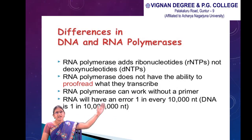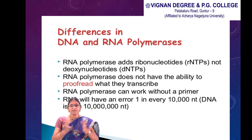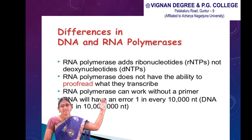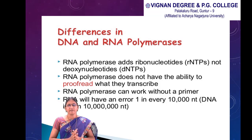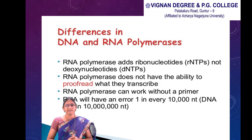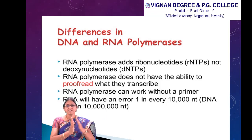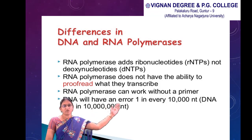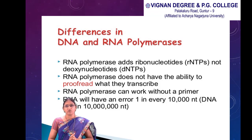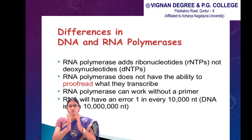The differences between DNA and RNA polymerases are: RNA polymerase adds ribonucleotides, not deoxyribonucleotides. RNA polymerase does not have the ability to proofread. Proofreading checks whether the right nucleotides are incorporated by moving the enzyme in the backward direction, which RNA polymerase cannot do. RNA polymerase can also work without a primer. The error rate for RNA is 1 in every 10,000 nucleotides, whereas for DNA polymerase it is 1 in 10^9 nucleotides.